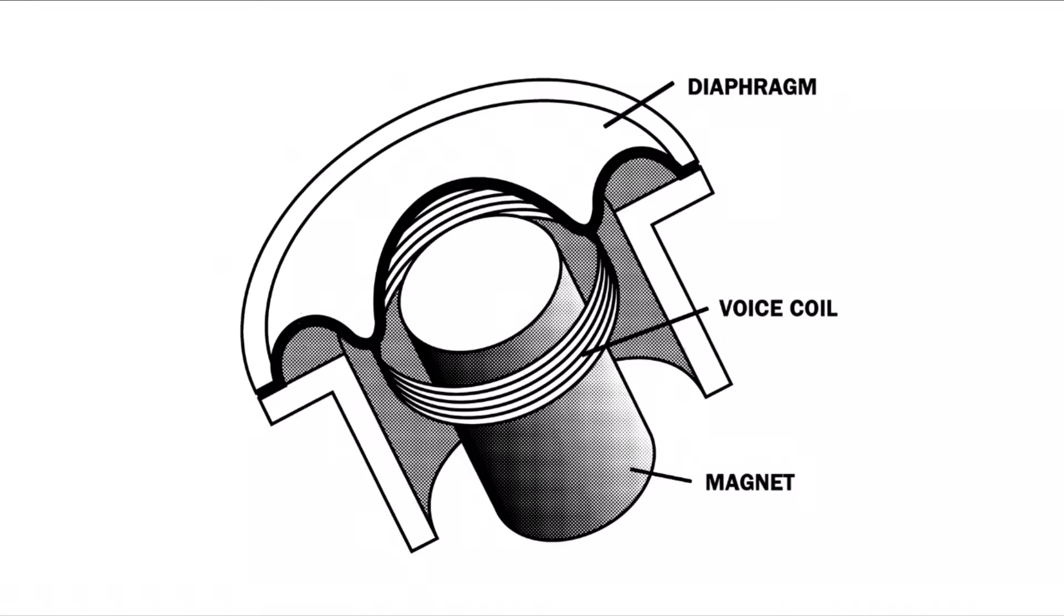As the coil moves back and forth through the magnetic field, an electric current continuously flows through the voice coil. This electric current then flows out of the microphone heading to whatever is attached to the microphone, which for instance could be an audio interface.